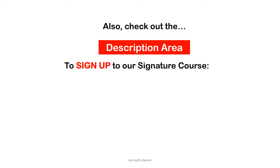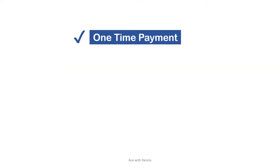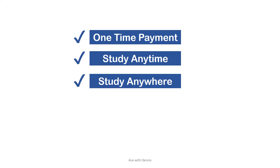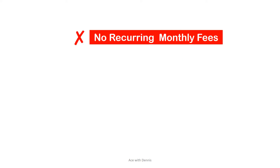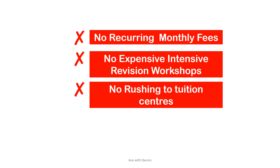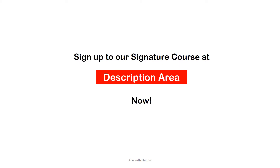Check out the description area to sign up to our signature course: GCSE level pure physics full course at an unbelievable price. It's a one-time payment. You can study anytime, anywhere at your convenience. You can easily monitor and track your study with Udemy's system. There are no recurring monthly tuition fees, no expensive intensive revision workshops, and you don't have to rush to any tuition centers or worry about missing lessons. Sign up now in the description area.